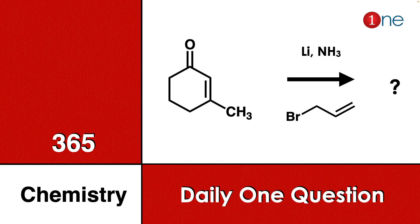Welcome to One Chemistry. This is the 365 Chemistry Series — one question daily. Here, cyclohexanone is given with a conjugated alkene attached with a methyl group on the third position. You are reacting it with lithium ammonia and allyl bromide. You have to find the final product.